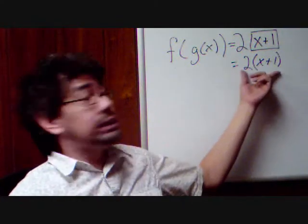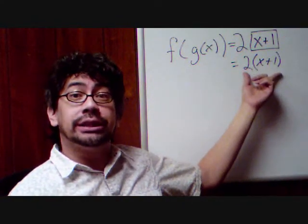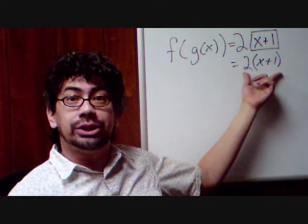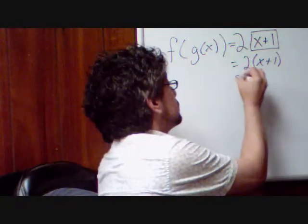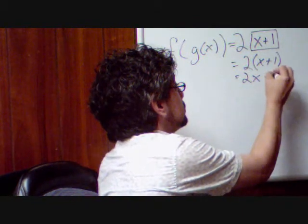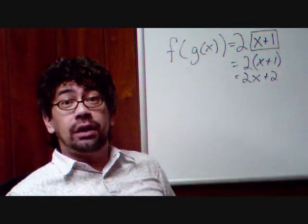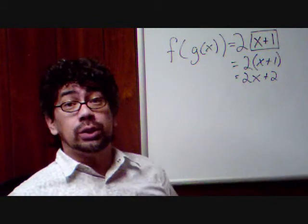Now I do this so that I can see when I get to this step I actually need to simplify this. I need to do distributive property. Multiply the 2 by the x and the 2 by the 1 to get f of g of x equaling 2x plus 2.